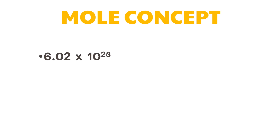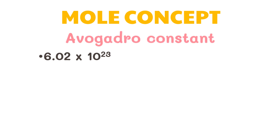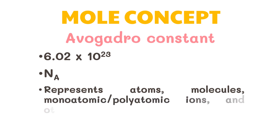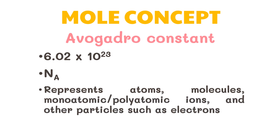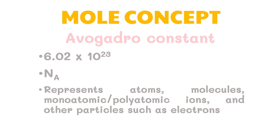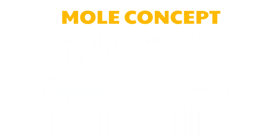The number 6.02 × 10²³ is popularly known as the Avogadro constant or Avogadro's number, and is often denoted by the symbol N sub A. The elementary entities that can be represented in moles can be atoms, molecules, monoatomic or polyatomic ions, and other particles such as electrons.